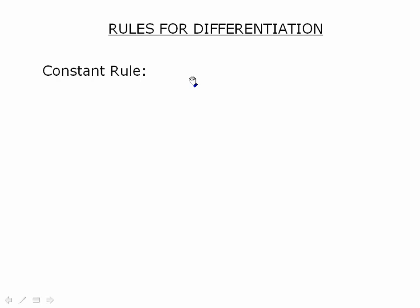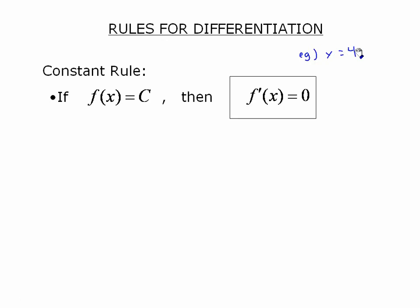To begin, the constant rule. Keep in mind that because a derivative represents the slope of a tangent line, if you were given a constant — for example, if you had y equal to 4 — that's a horizontal line. So the slope of the tangent line to a horizontal line is always going to be 0. Therefore, the derivative of this function is going to be 0.